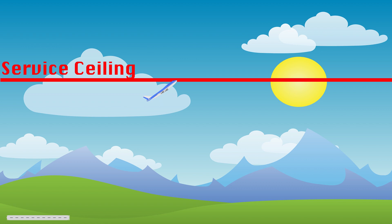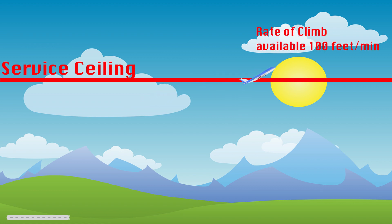There will be a point called the service ceiling at which the aircraft will only be capable of giving you 100 feet per minute. This is your service ceiling — whenever you have maximum continuous thrust set and the aircraft is only capable of giving you 100 feet per minute, that is the service ceiling. It is a thrust-limited altitude, because you don't have any thrust available anymore to produce more rate of climb.